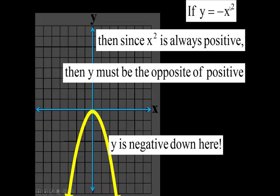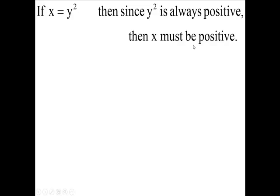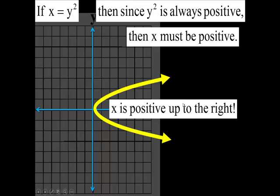Now, that's when you have x squared. What if y is squared? If y squared equals x, then since y squared is positive, it says x is positive. Where is x positive? Everywhere to the right. So we've gone upward, we've gone downward, we've gone right. The only thing we can do is go left.